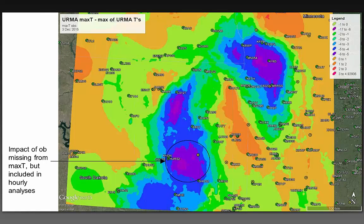Another issue with the new min/max temperature analysis: observations that get into some hourly analyses but not every hour create problems. We can do temperature analyses for individual hours when observations report, but we can't compute a min or max temperature analysis for a 12-hour period if an observation is missing some hours. This results in situations where the max of the hourly URMAs can be significantly warmer than the max-T value of the URMA itself.